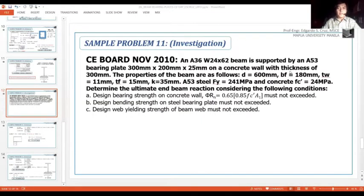Hi everyone, today I'm going to discuss an example on the analysis or investigation of beam bearing plate. This sample problem is taken from an actual CE board exam wherein an A36 W24x62 beam is supported by an A53 bearing plate 300x200x25mm on a concrete wall with thickness of 300mm.